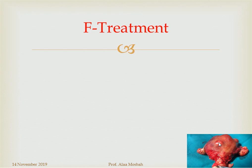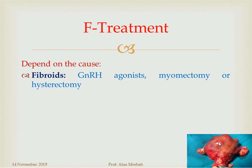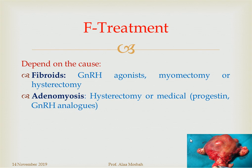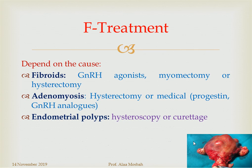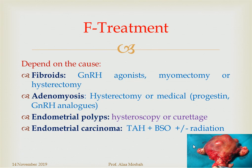Treatment of a case with abnormal uterine bleeding depends on the cause. For a fibroid, I can do myomectomy, hysterectomy, or hormonal treatment using GnRH agonist. For adenomyosis, I can do hysterectomy or medical treatment like gestagens, progestins, or GnRH agonist. For endometrial carcinoma, laparotomy with total abdominal hysterectomy, bilateral salpingo-oophorectomy, pelvic lymphadenectomy, and postoperative radiation are performed. This picture shows a specimen of multiple fibroid hysterectomy.